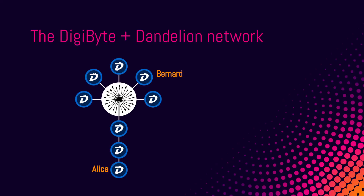If at any time your transaction comes across a non-Dandelion-supporting node as it grows the stem, it will simply flower and disperse the transaction immediately, just like it would traditionally. So how does Dandelion know when to stop making the stem if it doesn't know how many hops it's been through? Each time the transaction reaches a new node, it does what is effectively a coin flip. Picture flipping a coin and needing to get tails three times in a row. On a heads flip, Dandelion continues to add to the stem. However, by the time you get your third tails in a row, it flowers — it broadcasts the transaction to everyone, as with the traditional dispersion method.